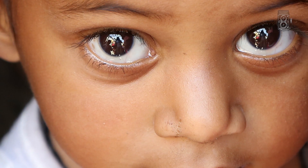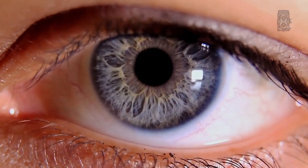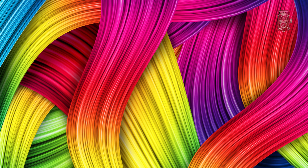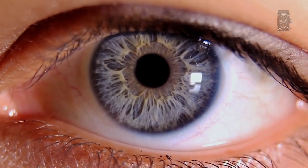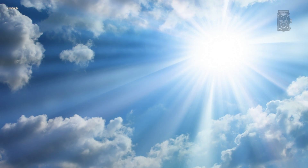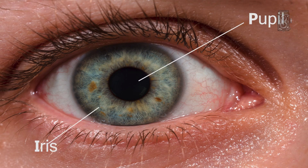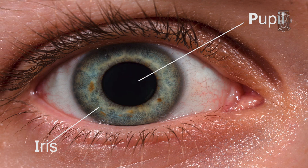We almost take them for granted all the time. Our eyes are so sensitive they can see 10 million different colors, and they are so adaptive they can see both in bright and in dark conditions. Tiny muscles in the iris make this possible by continuously adjusting the pupil — making it smaller in bright conditions and larger in dark conditions.